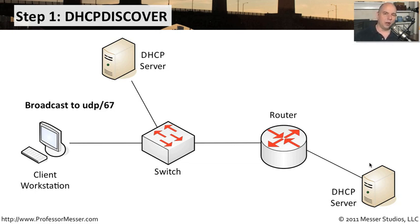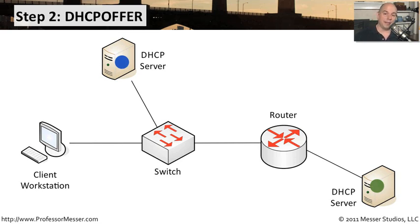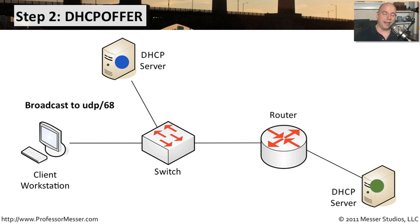The first thing that happens when a device starts up is it sends a broadcast out to UDP port 67. It's a broadcast, so it's going out to everything on the network. That discover process is seen by the DHCP servers, which then go to step two and send back a response — a DHCP offer — as a broadcast to whatever device happened to send that.